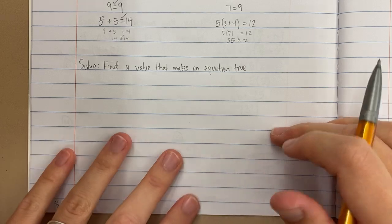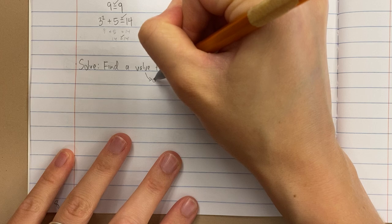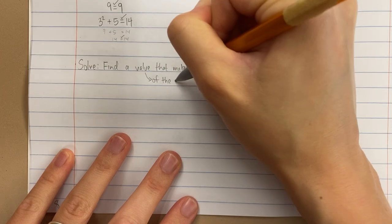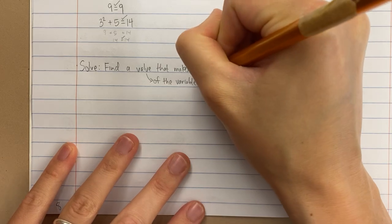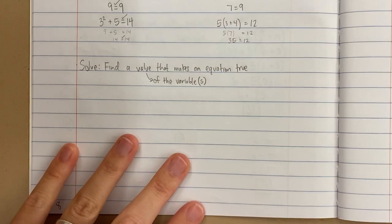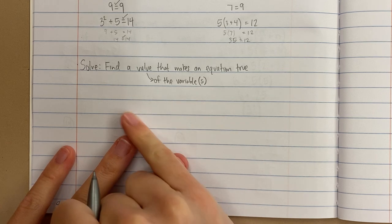Let's see what I mean. It's a value of the variable. Later in the year it's even going to be two variables, but for right now we're just going to find a value of a variable that makes the equation true.